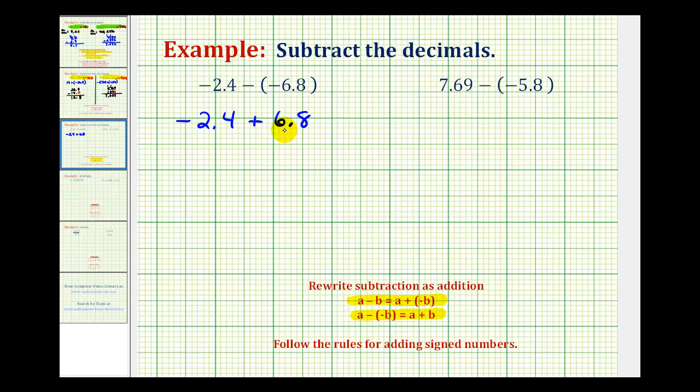So in this case, we want to subtract the absolute values, and then use the sign of the number with the larger absolute value. Well, notice that positive 6.8 is going to have the larger absolute value, so this sum is going to be positive, which means this difference will be positive also. Hopefully that makes sense. Positive 6.8 is going to outweigh negative 2.4, resulting in a positive sum.